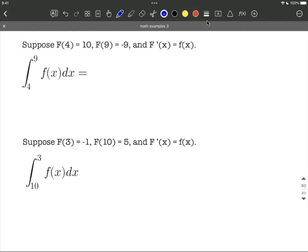Let's take a look at this problem where we're given that big F of 4 is 10, big F of 9 is negative 9, and we've defined big F prime of x to equal little f of x.